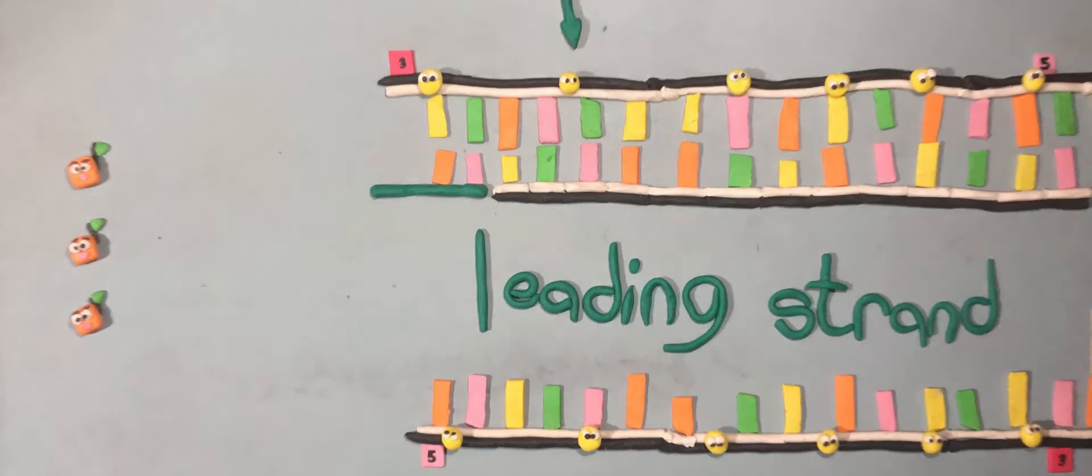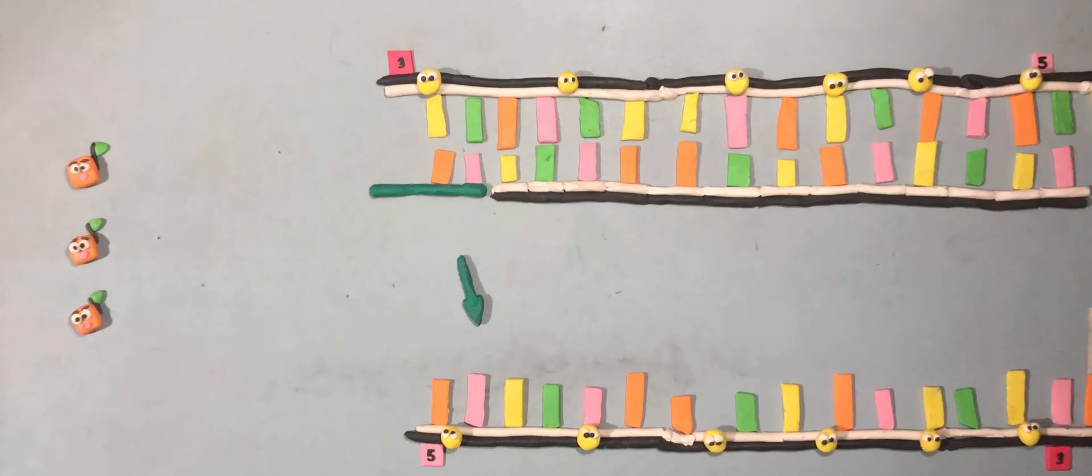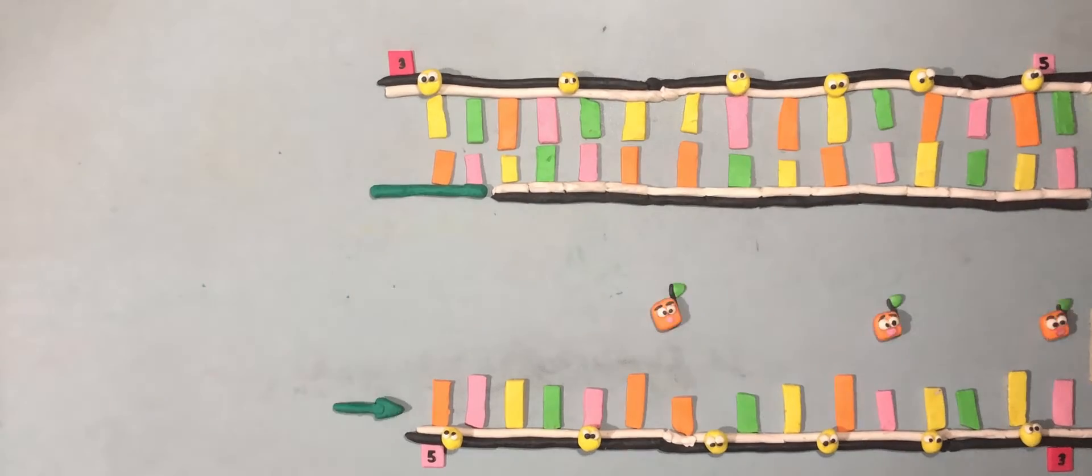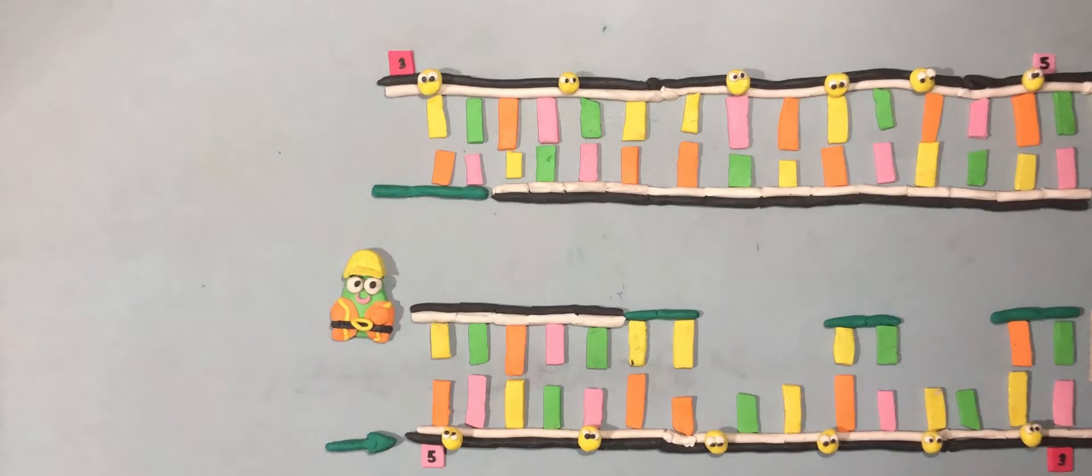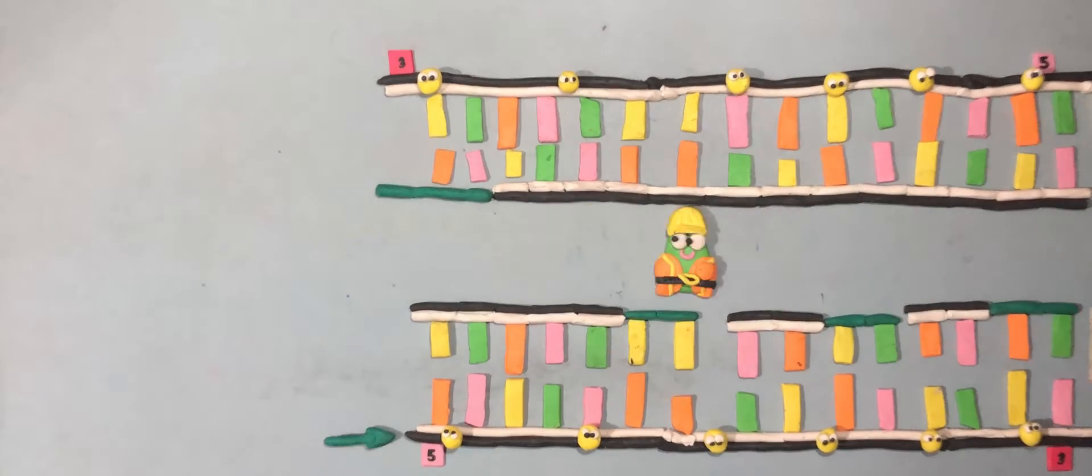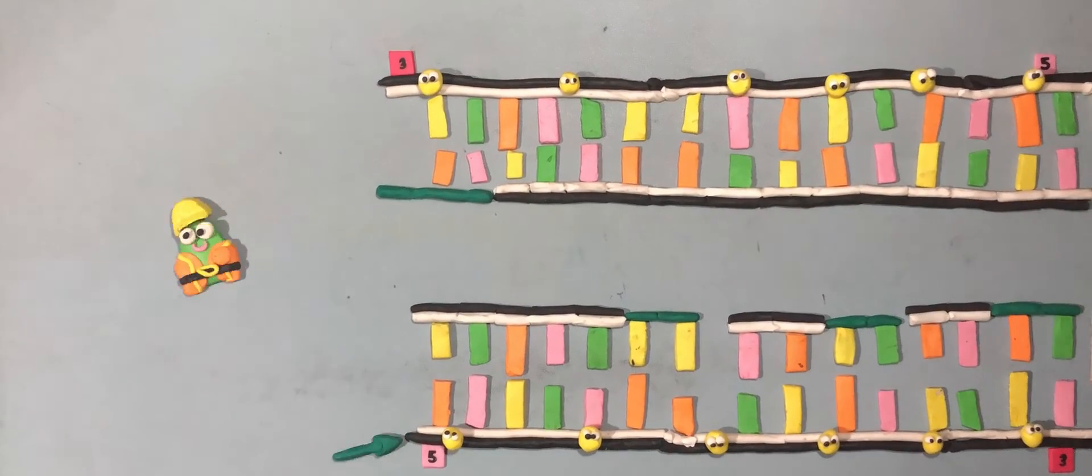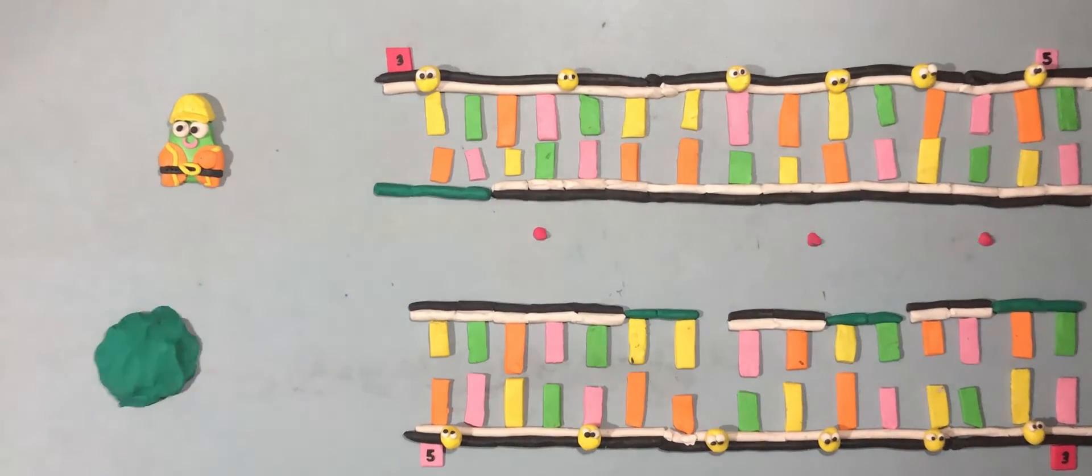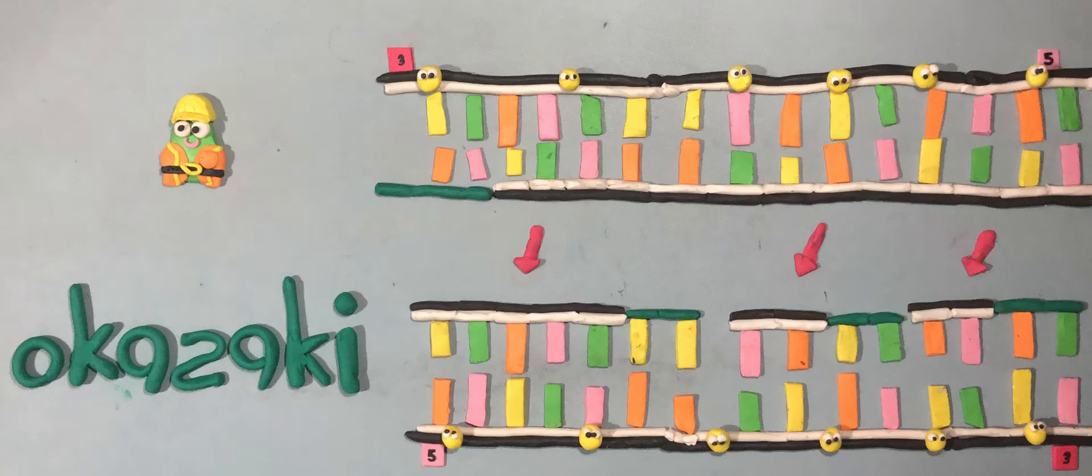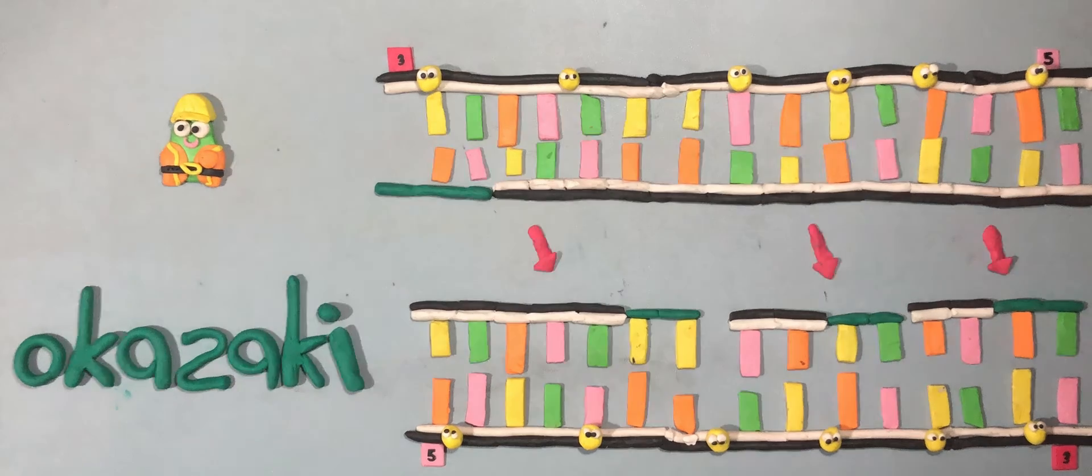On the template strand with 5' to 3' orientation, multiple primers are synthesized at specific sites by primase and DNA polymerase synthesizes short pieces of new DNA in the 5' to 3' direction and fills the gaps with new DNA. This new strand is called the lagging strand. These small DNA fragments that are discontinuously synthesized are called Okazaki fragments, which was named after the discoverer, Reiji Okazaki.